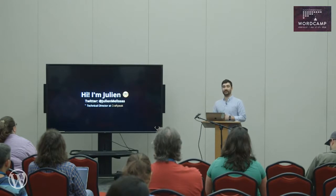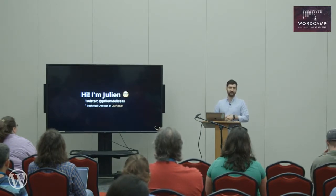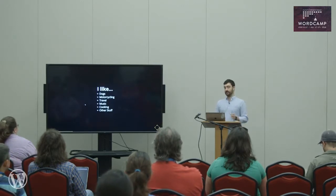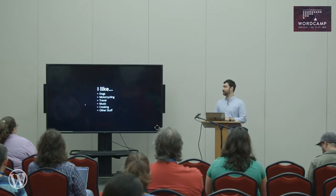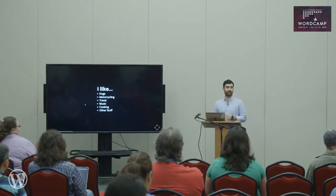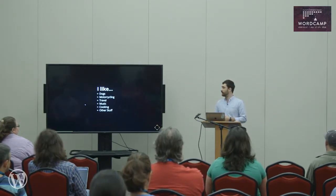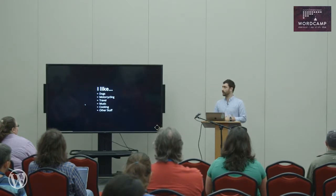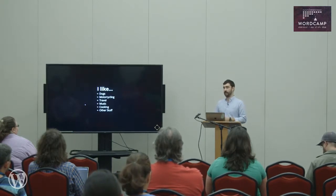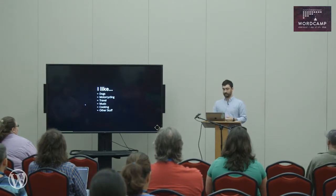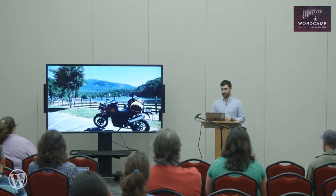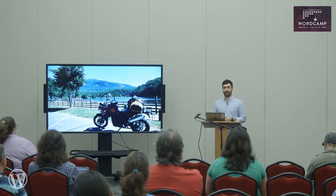Quick introduction: I'm Julian, the technical director at Craftpeak. We make websites for breweries. My Twitter handle is right there if you want to take a picture or tell me I'm wrong. I like dogs and motorcycling and I've been really into traveling. I just came back from WordCamp Europe in Belgrade, Serbia, where I gave this workshop with Zach Gordon — he's a popular educator in the WordPress space doing a lot of JavaScript and Gutenberg stuff. I highly recommend his course. This is my dog Wilbur, and that's my motorcycle on the way down to South Carolina.